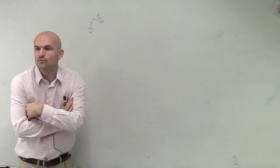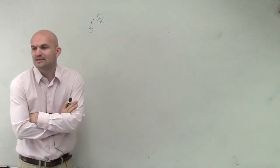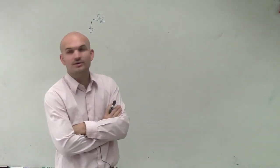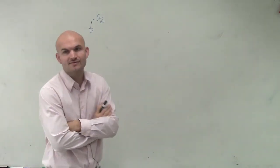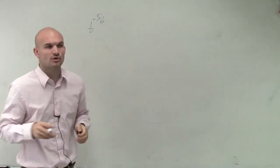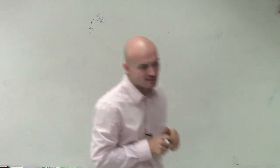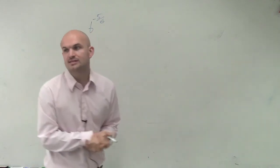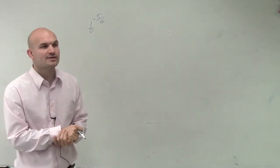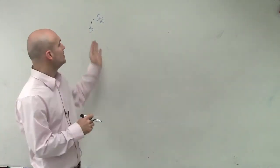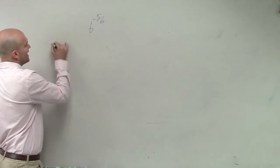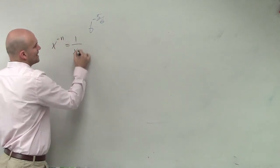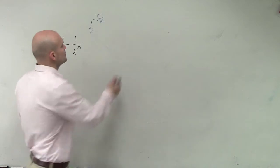So we have b to the negative 5/6. When looking at this problem, we need to apply a couple of rules — they're asking us to simplify, to put this in simplest form. There are a couple of things we need to remember. First of all, whenever you have x to the negative power, we know that equals 1 over x to the n. So let's go and do that.